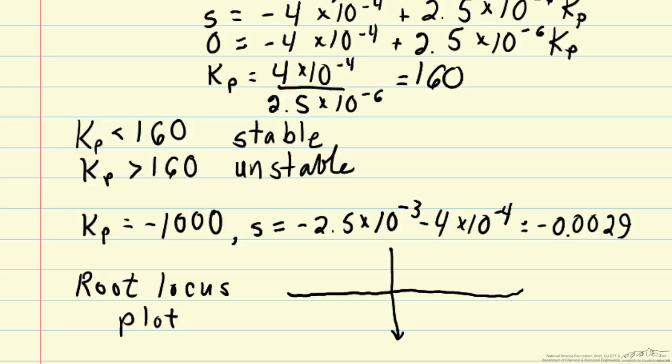The root locus plot plots the imaginary value of s versus the real value of s. In this particular case, we don't have an imaginary component. S is always going to be real. But we can plot how the roots of the system would change as we change kp. We can plot this crossover value here.